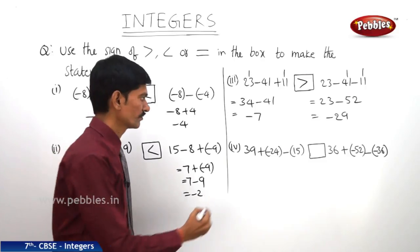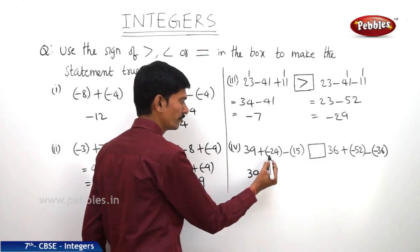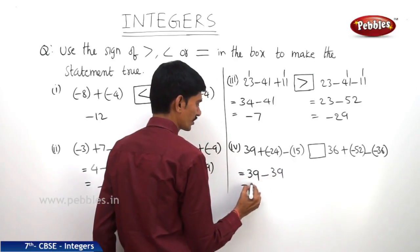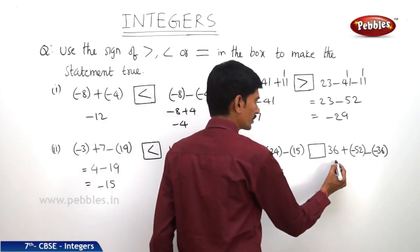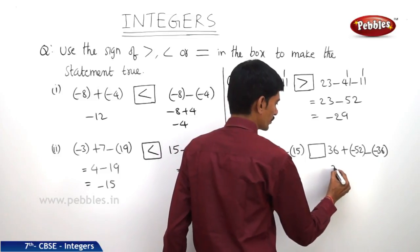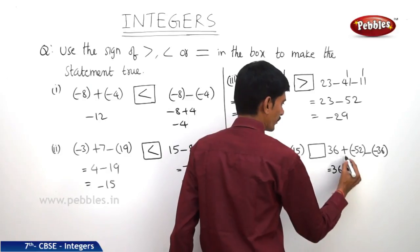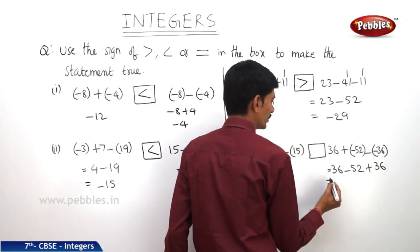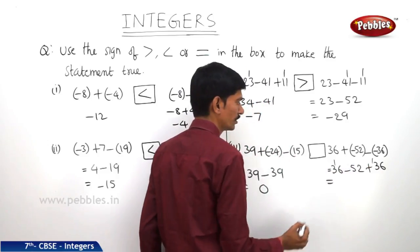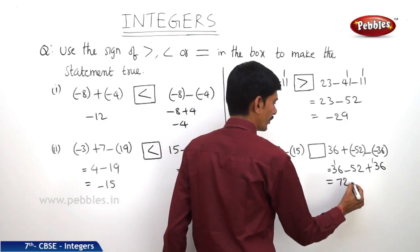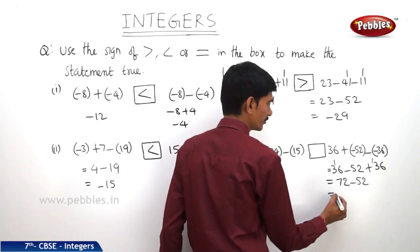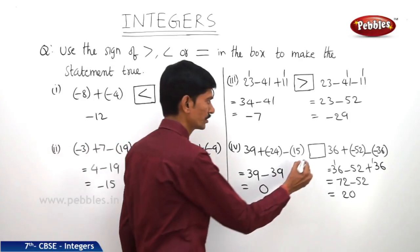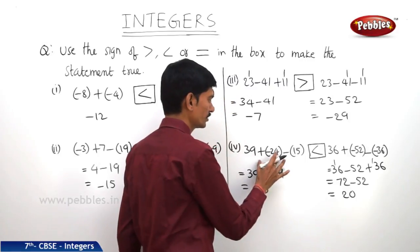Fourth question. We add both negative integers: minus 24 minus 15 gives minus 39. Then 39 minus 39 is 0 on the LHS. For the RHS: plus (minus 52) gives minus 52, and minus (minus 36) gives plus 36. We add the two positive 36s to get 72, then 72 minus 52 is 20. LHS is 0 but RHS is 20, and 0 is smaller than 20, so LHS is less than RHS.